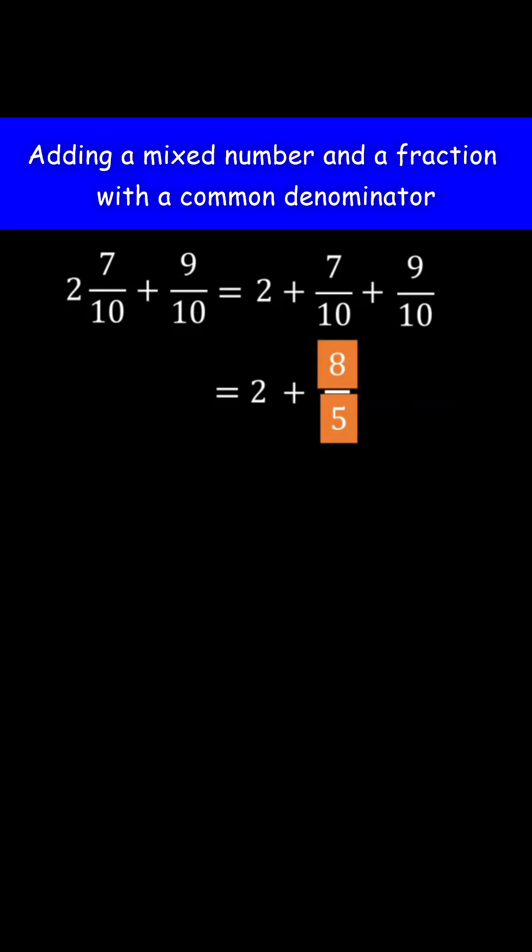But 8 over 5 is an improper fraction, so we need to write it as a sum of a whole number and a proper fraction. We are doing this because the fraction part of a mixed number is always a proper fraction.